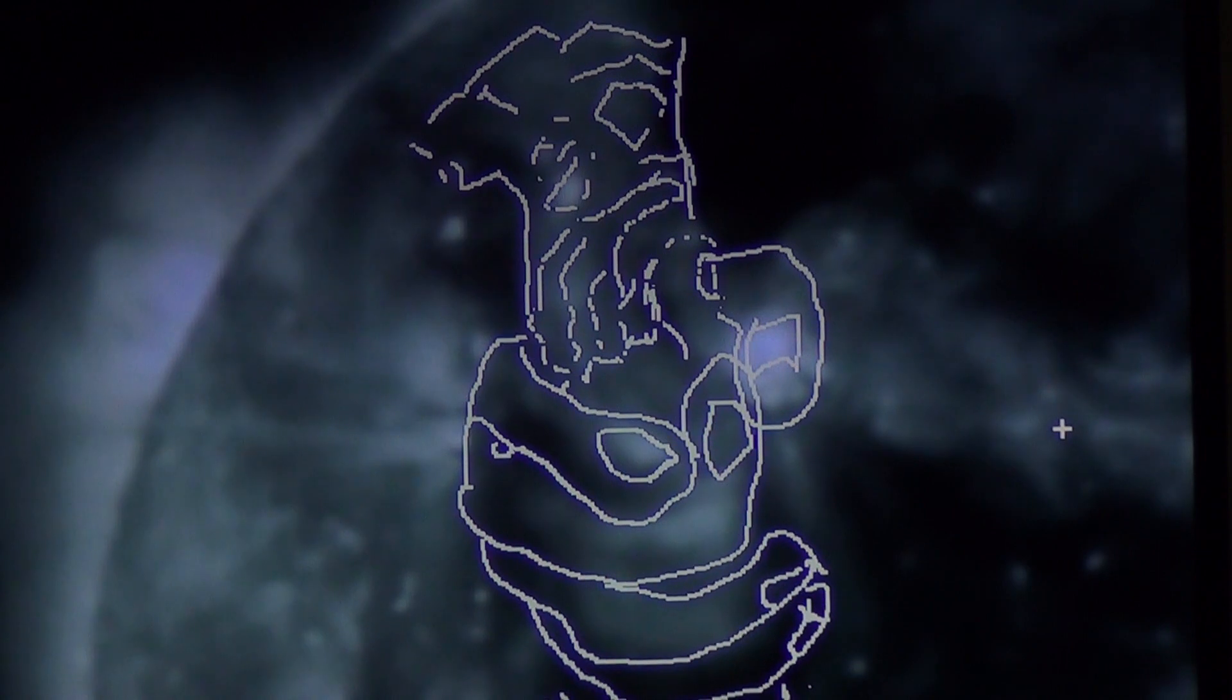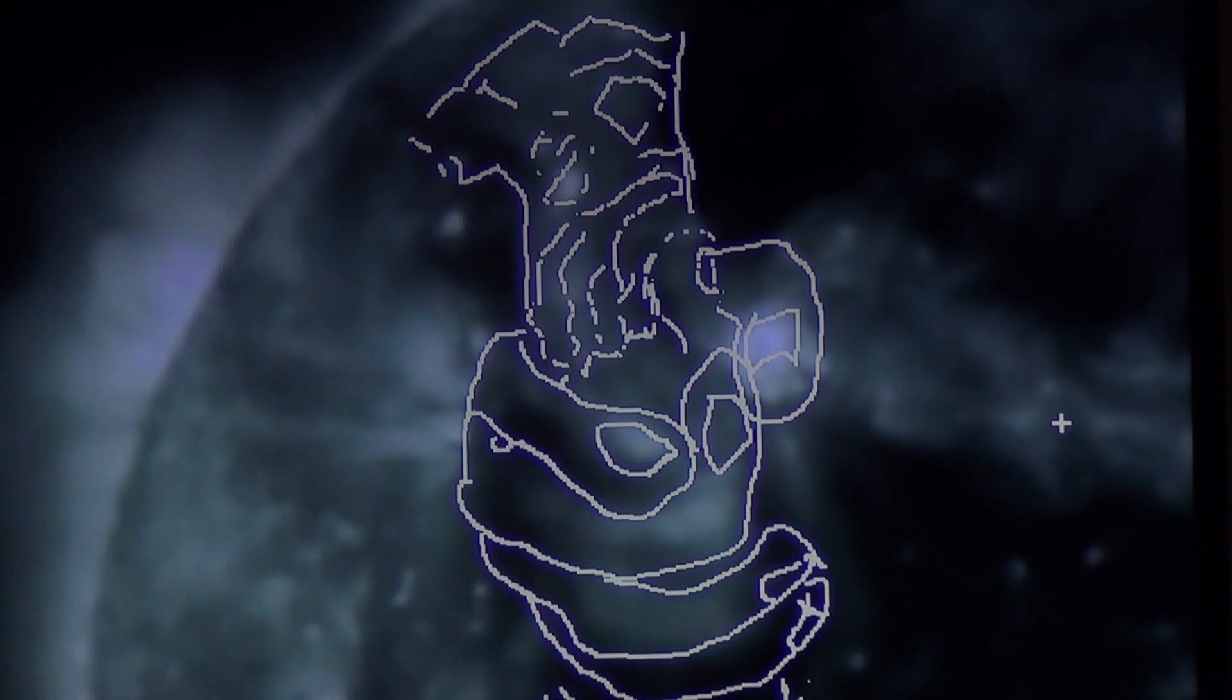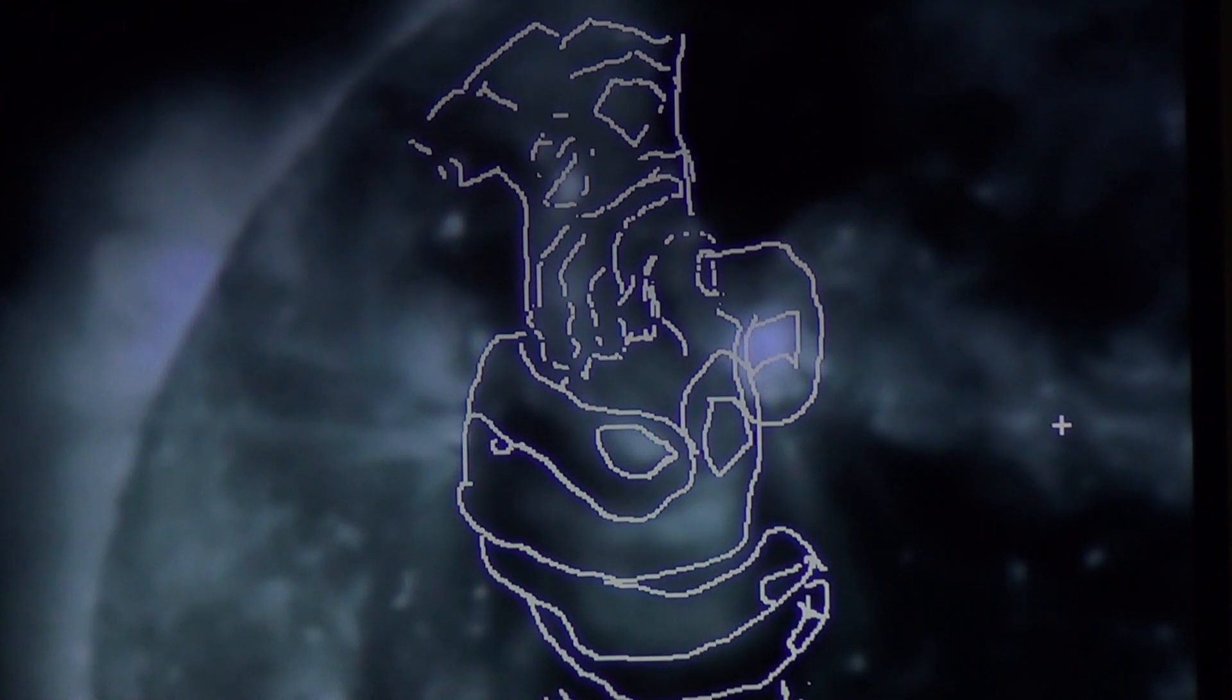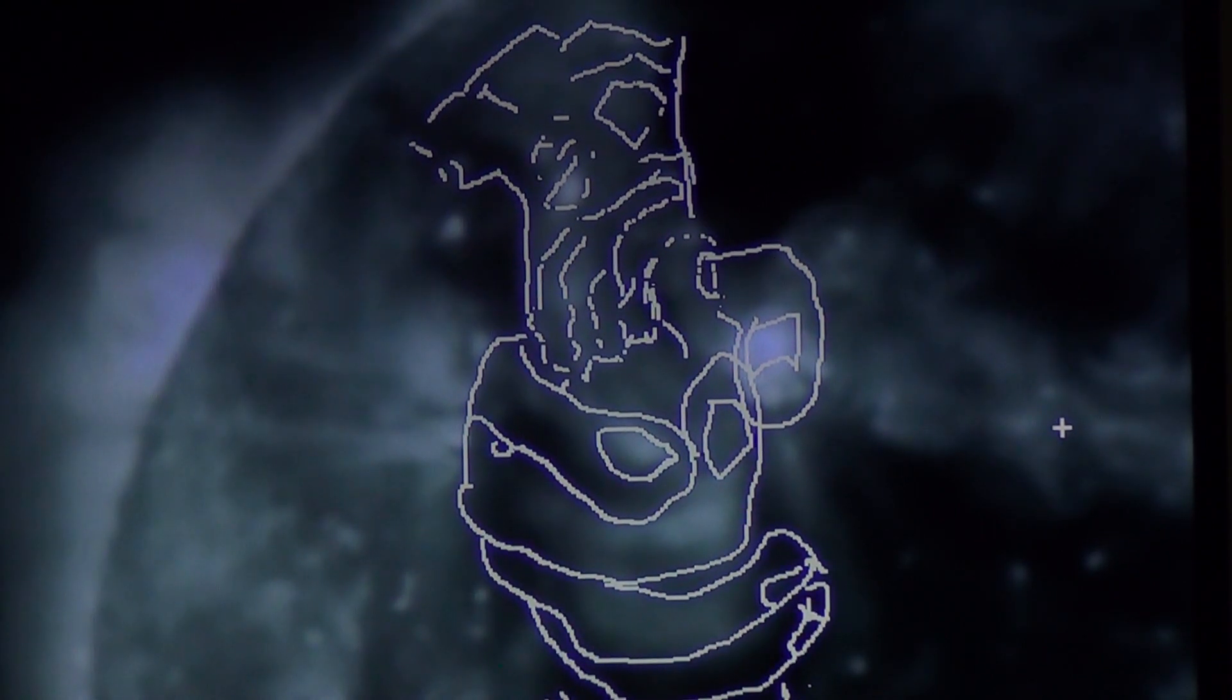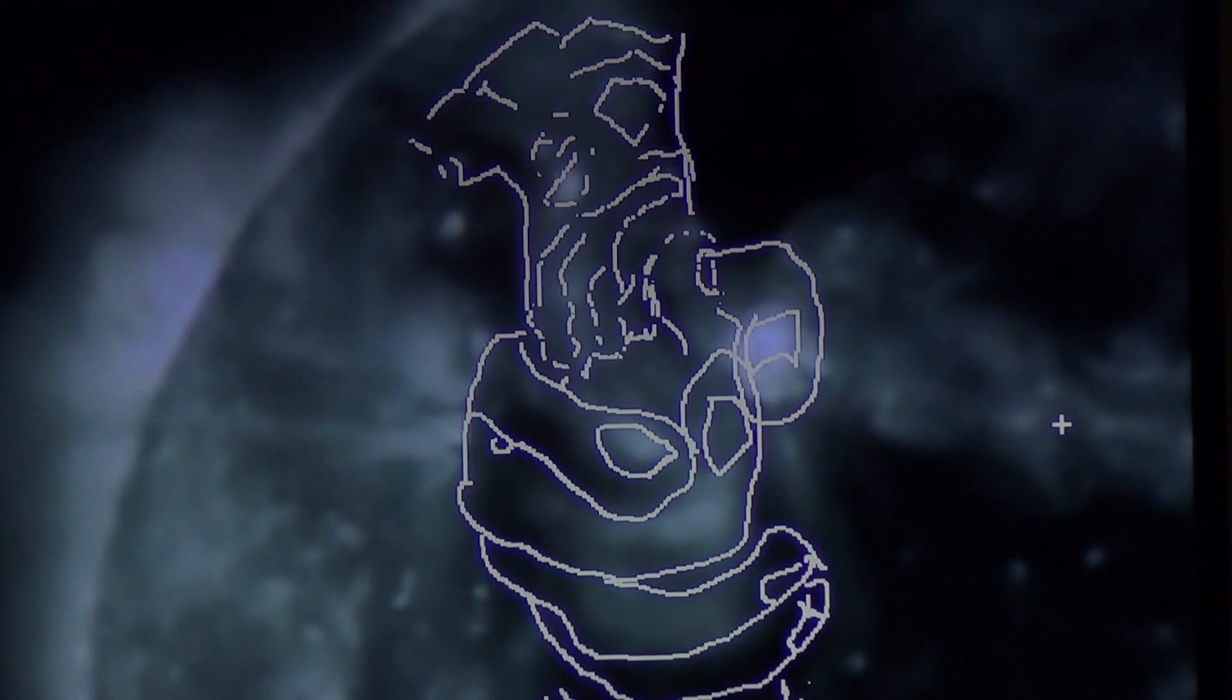According to the Sumerian clay tablets translated by Zacharias Sitchin and other people, it talks about, and there are several statues that show Enki holding the ceiling that contains the divine laws of the universe.